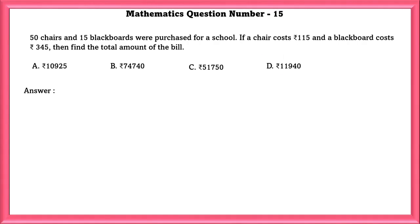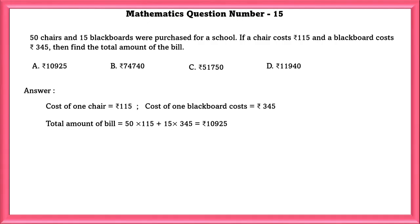Mathematics Question Number 15: 50 chairs and 15 blackboards were purchased for a school. If chairs cost 115 rupees and blackboard cost 345 rupees, then find the total amount of the bill. In order to find the total amount of the bill, cost of 1 chair times number of chairs, cost of 1 blackboard times how many blackboards. If we do that, we will get 10,925.